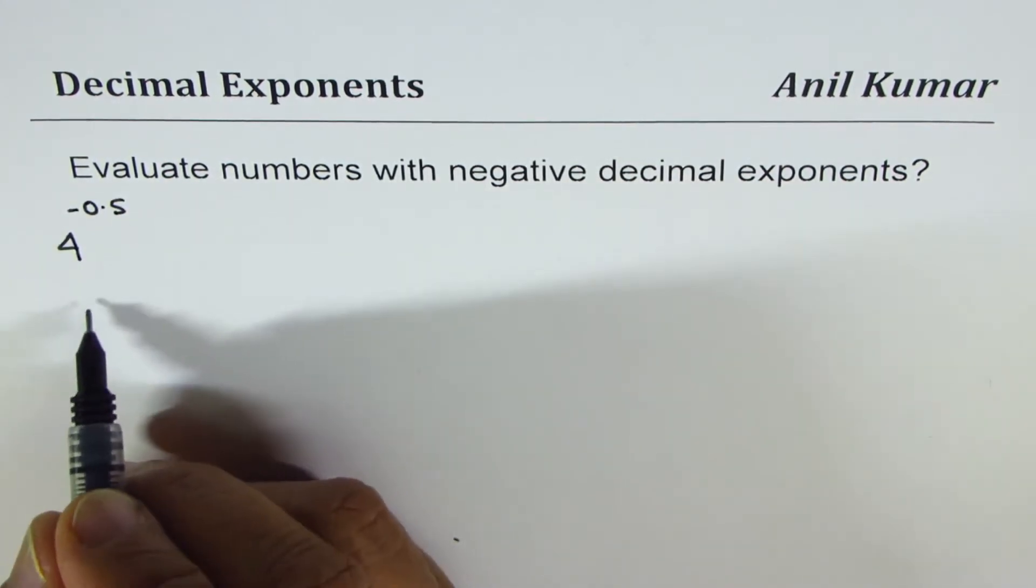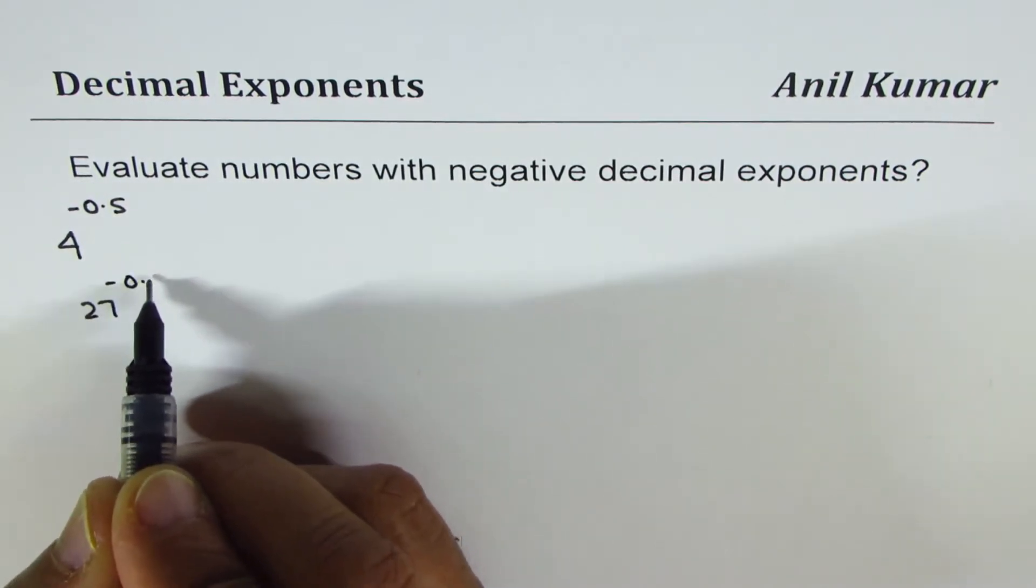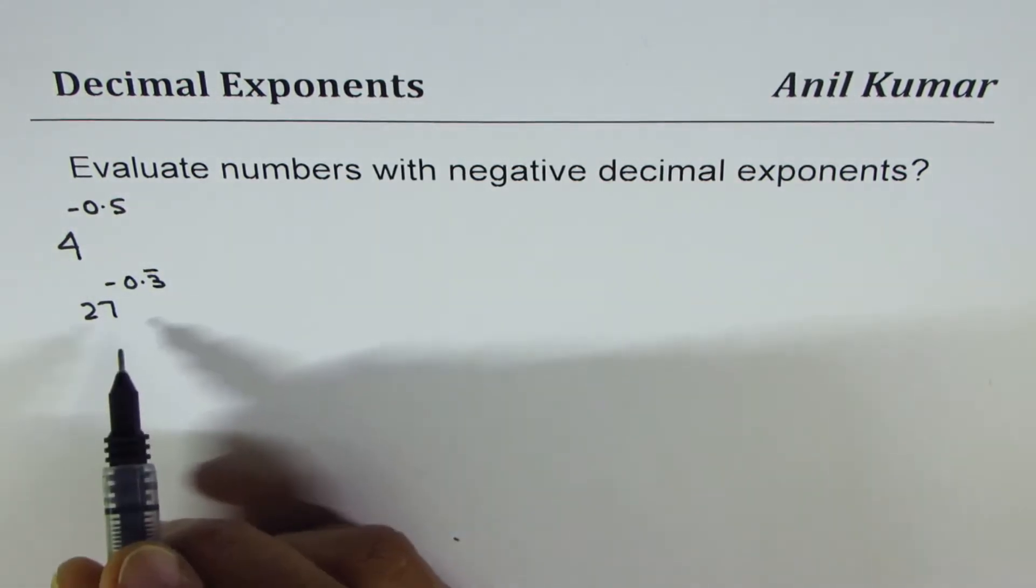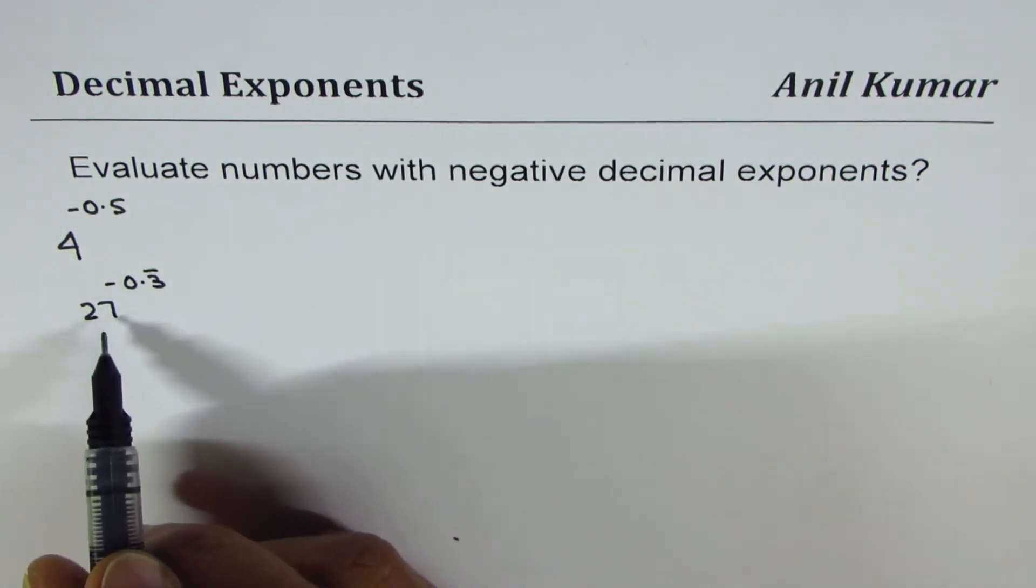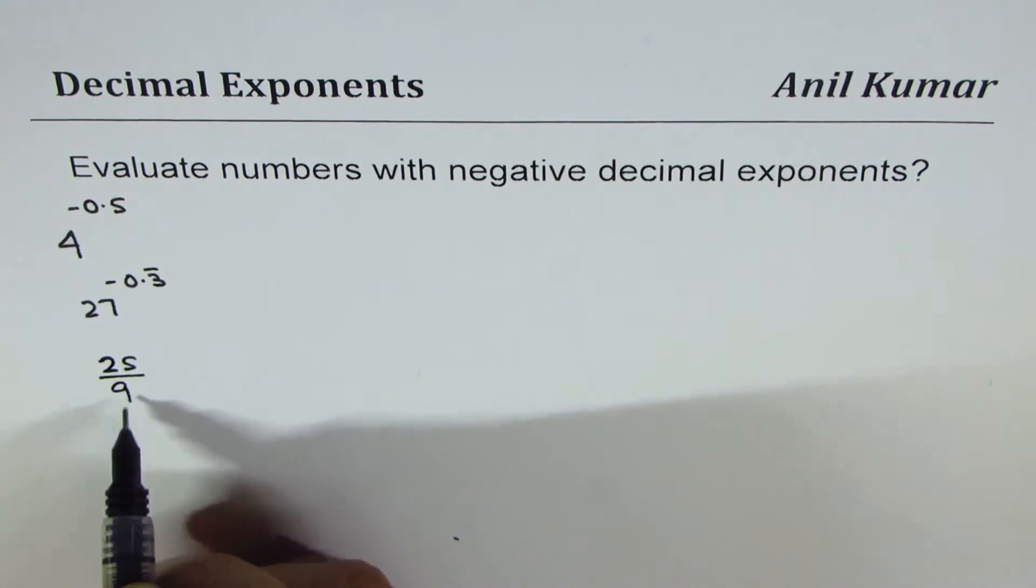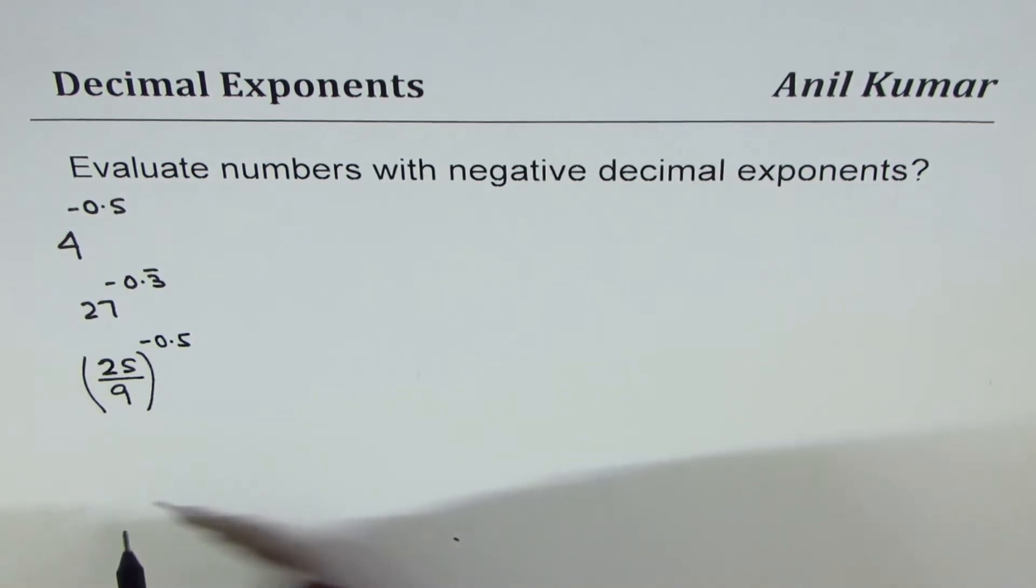Now we could take 27 to the power of minus 0.3 recurring, which is 1 over 3. Now we could also take numbers like fractions: we could have 25 over 9 to the power of minus 0.5 to begin with.